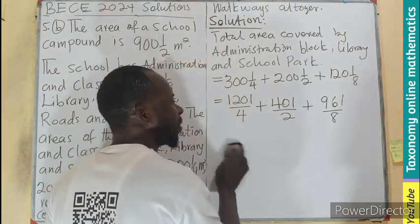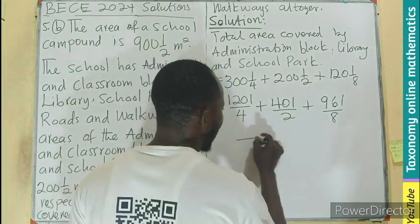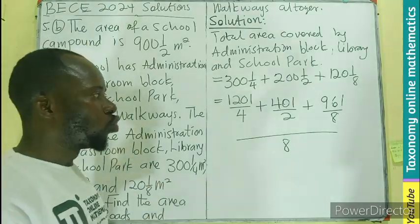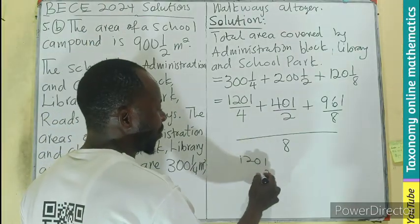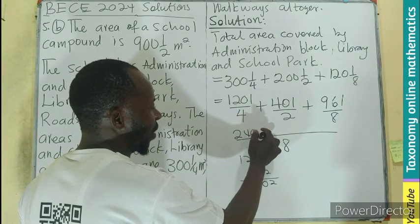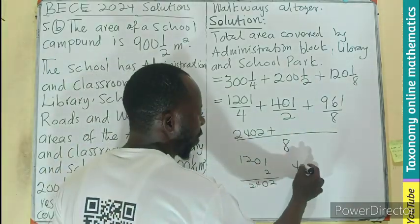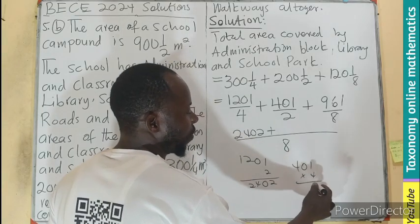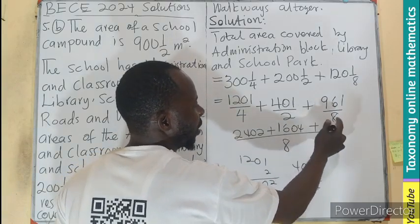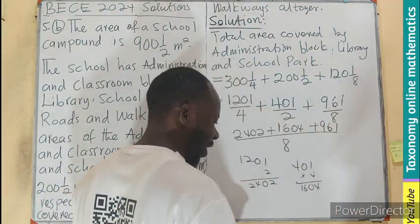We can see that all fractions can share a common denominator of 8. So with 8 as the LCM: 4 goes into 8 two times, so 1,201 times 2 gives 2,402 over 8. Then 2 goes into 8 four times, so 401 times 4 gives 1,604 over 8. And 8 goes into 8 once, so 961 times 1 gives 961 over 8.